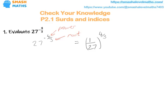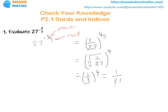Now we've got to deal with the power 4 and the cube root, and it's always easy to make the numbers smaller first. So let's deal with the cube root. That gives us the cube root of 1 over 27 to the power 4. Separating these out gives us 1 over 3 to the power 4, which is 1 over 81, and there we go.